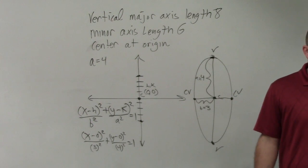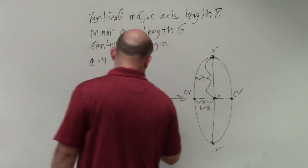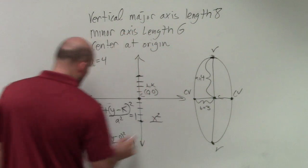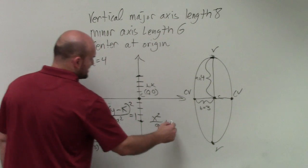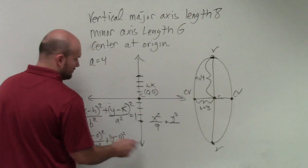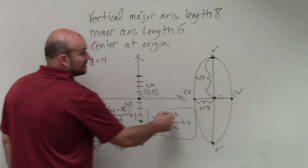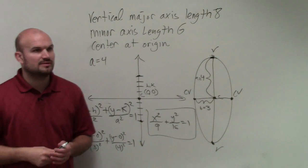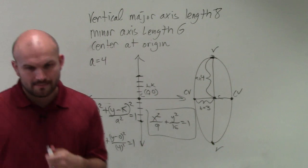So does everybody see how that just plugged in? And now we just simplify it. I don't really need to write minus 0. So my final equation would be x squared over 3 squared is 9, plus y squared over 16 equals 1. And that is your answer to question number 1. And that's all you do. Just follow the process, step by step by step.